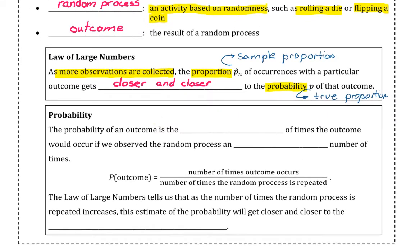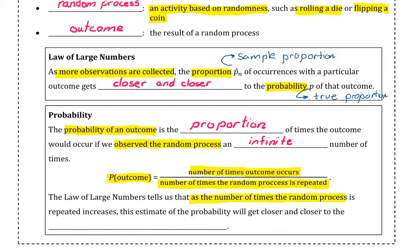And lastly, probability. The probability of an outcome is defined to be the proportion of times the outcome would occur if we observed the random process an infinite number of times, where the probability of this outcome is calculated as the number of times the outcome occurs divided by the number of times the random process was repeated. The law of large numbers tells us that as the number of repetitions increases, the estimate of the probability will get closer and closer to the true probability.